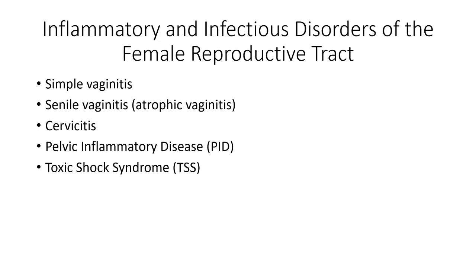Diagnostic tests include gram stains of secretions, culture and sensitivity to identify the organism, ultrasounds, MRIs, and vaginal ultrasound. Labs will show elevated leukocytes (WBCs). The ESR (erythrocyte sedimentation rate) is increased, indicating inflammation. The CRP (C-reactive protein) is also elevated, also indicating inflammation. Both ESR and CRP are indicative of inflammation.